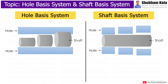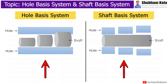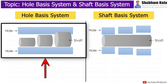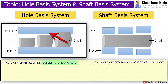In this video, we are going to discuss about hole basic system and shaft basic system, which are used in machine design process. These two different components have different functions and they are combined together to make the machine. If a hole and shaft assembly consists of a basic hole, that type of system is known as hole basic system.